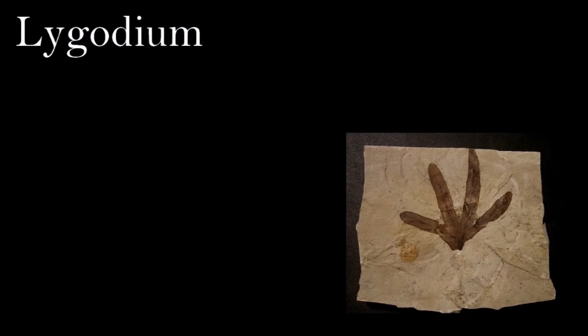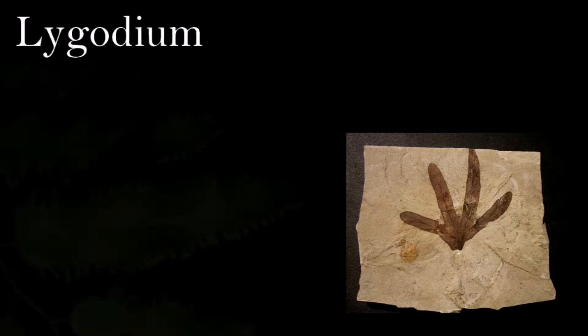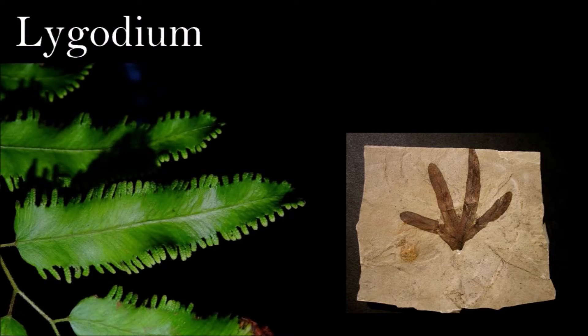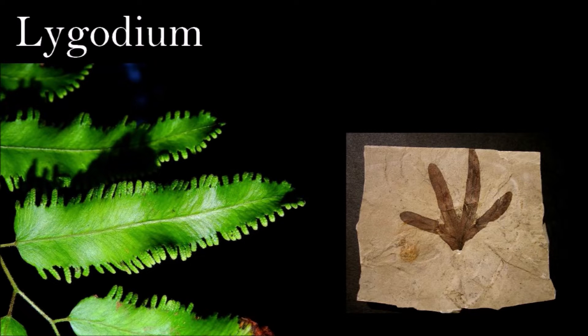Lygodium contains about 40 species of ferns, which are characterized by having leaves that continue growing to undetermined lengths, with slender twisting axes that allow them to climb. These climbing leaves are unique among ferns, giving, at first sight, the wrong impression — that of a climbing leafy stem.